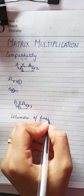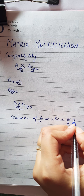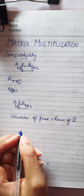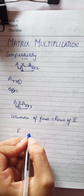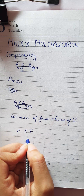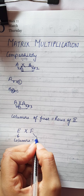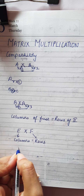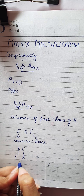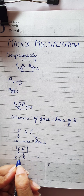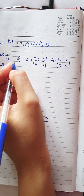Suppose I have to multiply two matrices, say matrix E and matrix F. If I want to find E×F, I check the columns of E against the rows of F. If I interchange and want to solve F×E, then I need columns of F and rows of E. So the position matters. Let's see how we can multiply now.